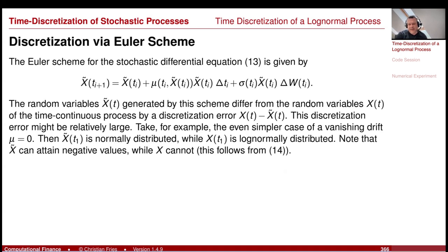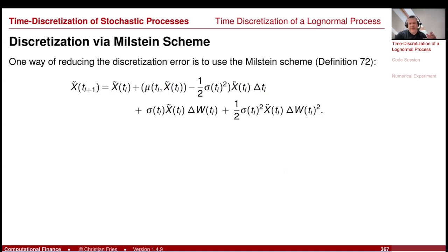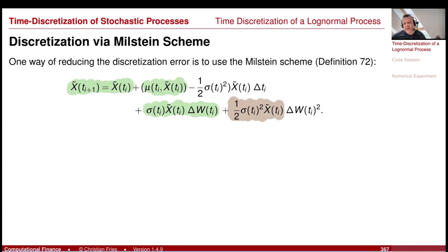Discretization via the Euler scheme: the next value is the previous value plus the coefficient frozen at the previous value. So it would be mu(t_i, X̃_{t_i}) * X̃ * Δt_i plus sigma(t_i, X̃_{t_i}) * X̃ * ΔW(t_i). The Milstein scheme is the same as the Euler scheme but with the Milstein correction: plus one-half sigma squared * X times sigma prime, specifically one-half sigma² * X * (ΔW² − Δt).